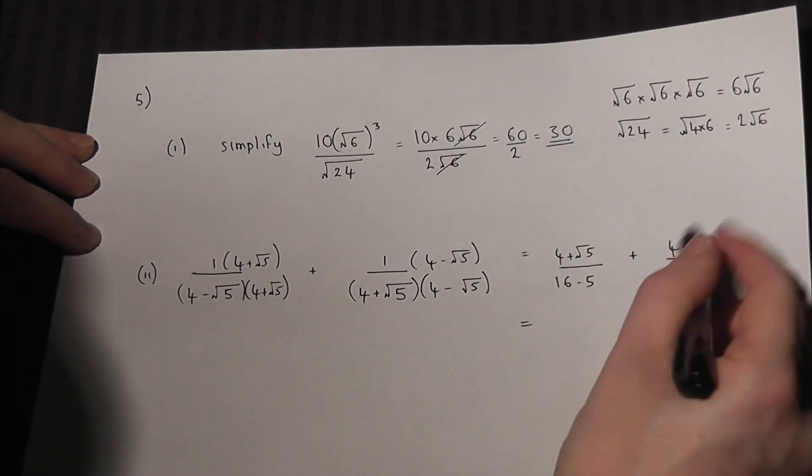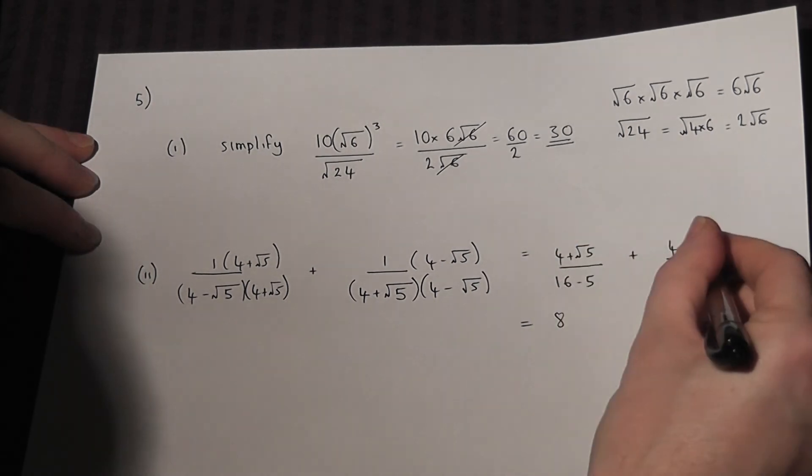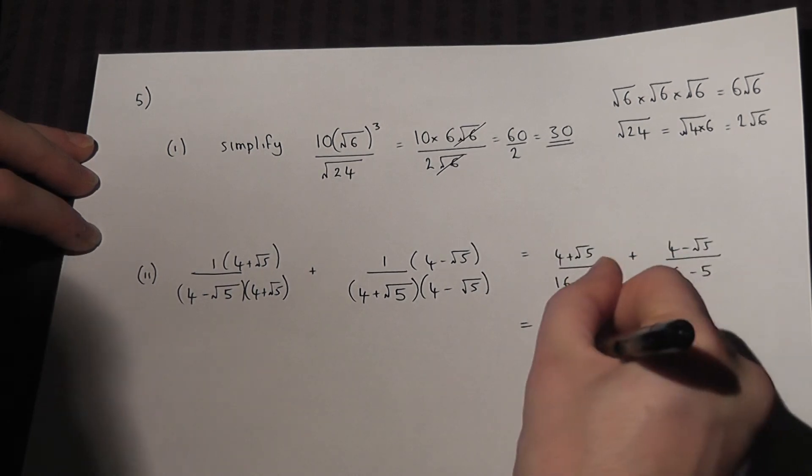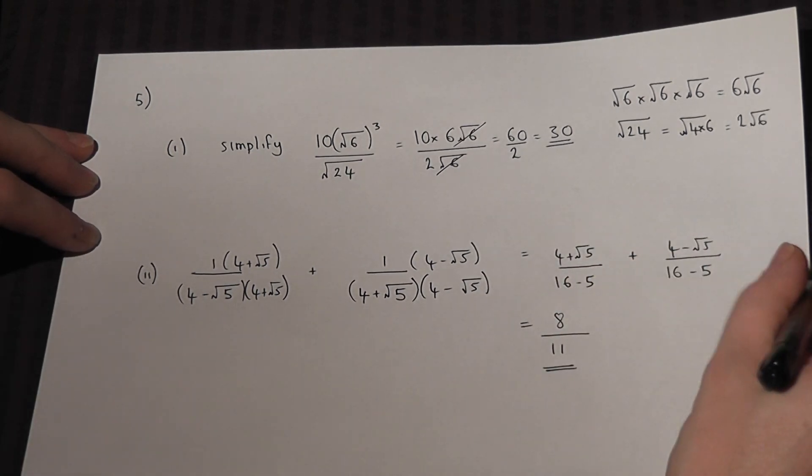Now then, 4 plus 4 is 8, root 5 take away root 5 cancels off, and then 16 minus 5 is 11. The answer is therefore 8 over 11.